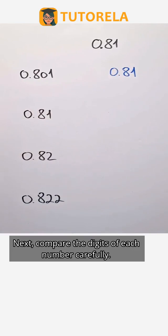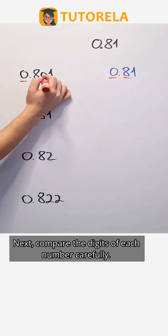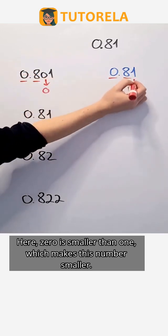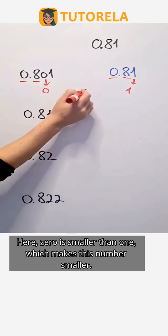Next, compare the digits of each number carefully. Here, 0 is smaller than 1, which makes this number smaller.